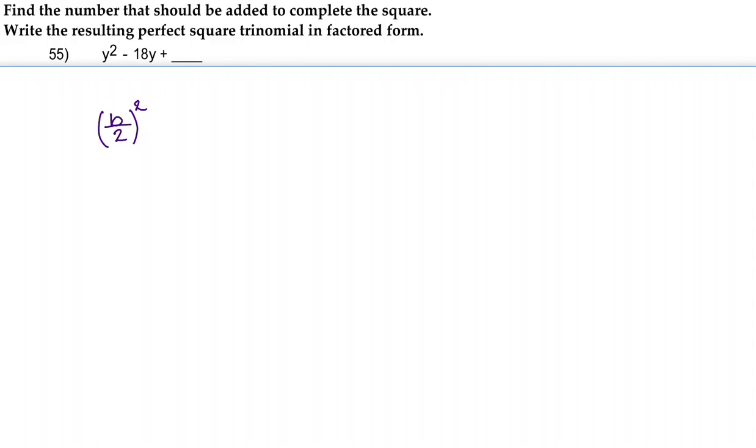This b refers back to the form ax squared plus bx plus c. In this expression our a is 1, our b is negative 18, and we still haven't found our c.